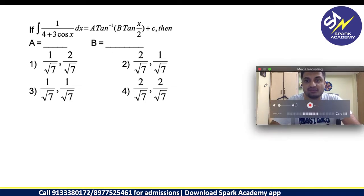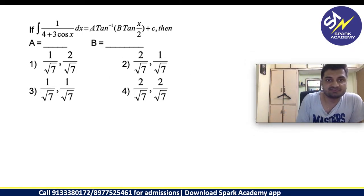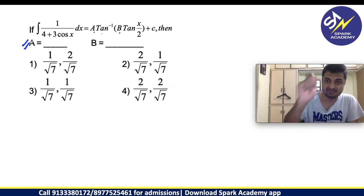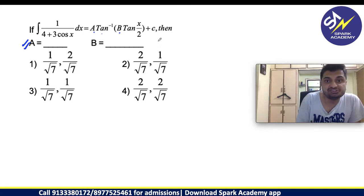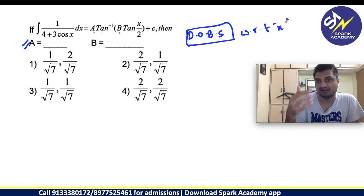The first question is, if integral 1 by 4 plus 3 cos x dx equals to A times tan inverse of B tan x by 2 plus C, then they are asking us what is A and B value.